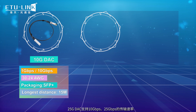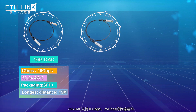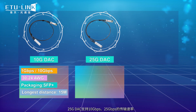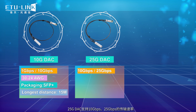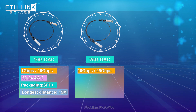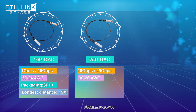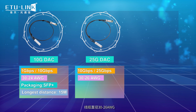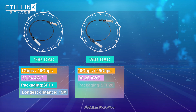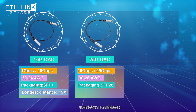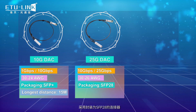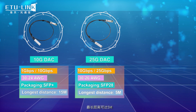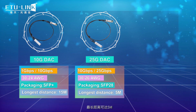The 25G DAC supports transmission rates of 10 Gb and 25 Gb. The cable diameter is 30 to 26 AWG, the packing form is SFP28, and the longest distance can reach 5 m.